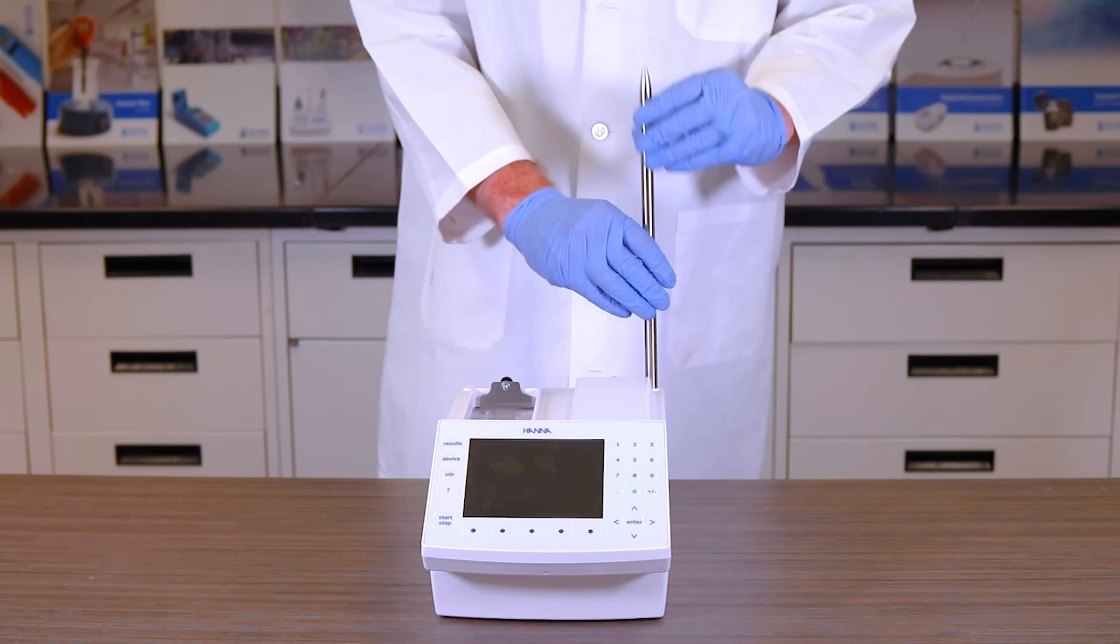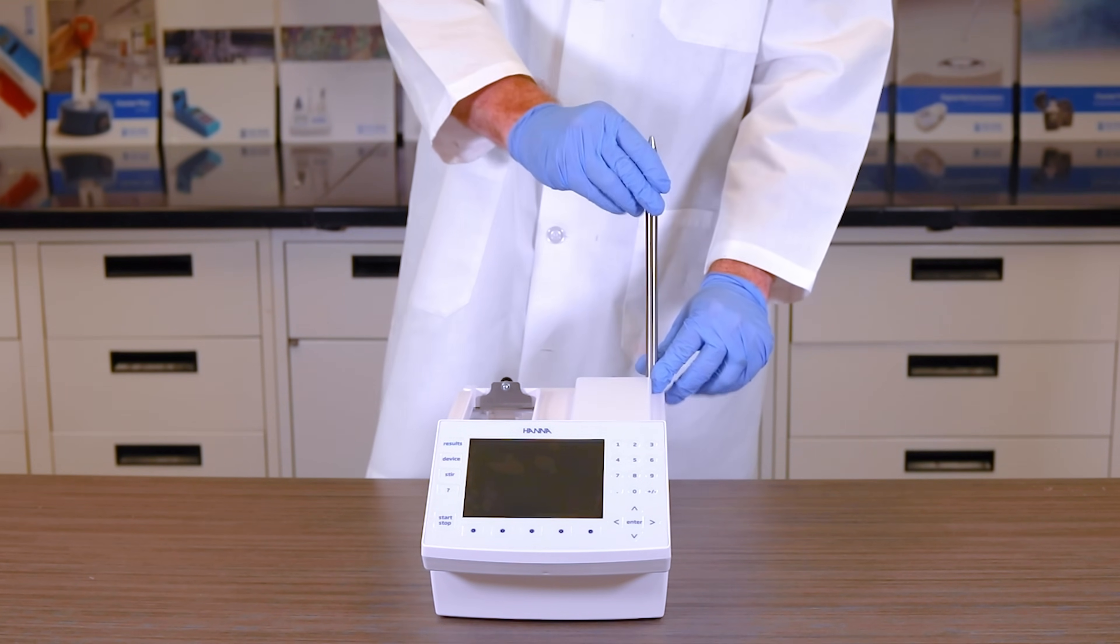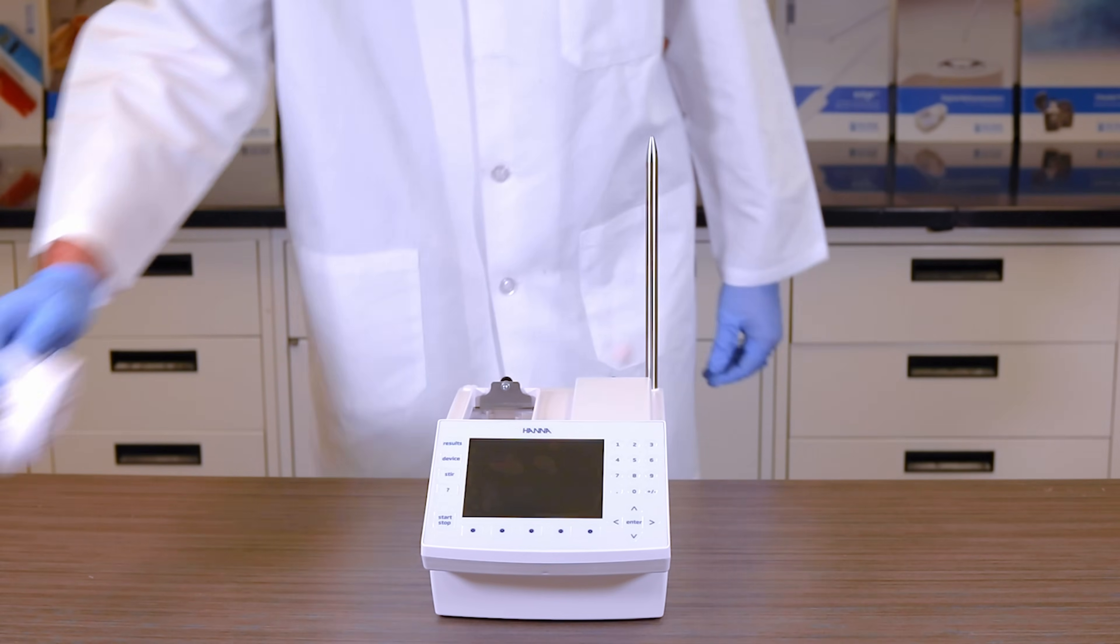Next, find your steel assembly rod and screw into place on either the left or right assembly well. Hanna Instruments recommends using the rightmost well.